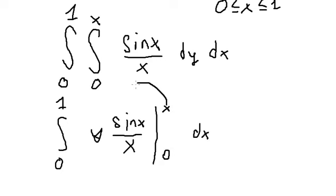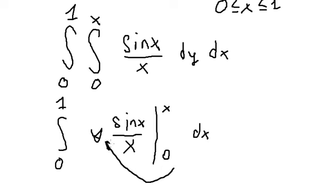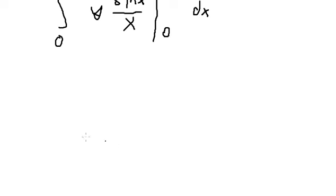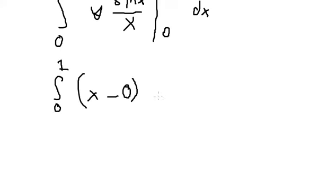We substitute s for y and zero for y. So we get s minus zero, times sin(s) times sin(s) over s, then ds. Now we simplify — s over s cancels, and we are left with sin(s) ds.